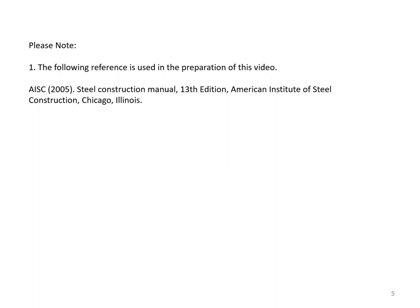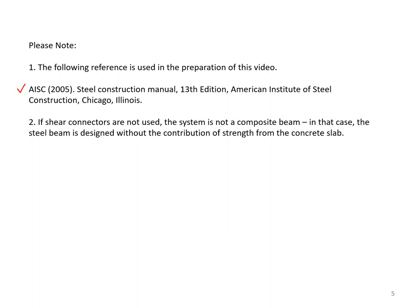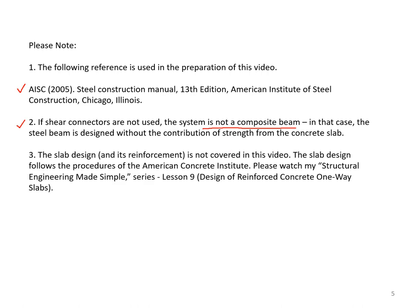The reference used in preparation of this video is the AISC 2005 Steel Construction Manual, 13th Edition, published by the American Institute of Steel Construction. If shear connectors are not used, the system is not a composite beam — the steel beam is designed without the contribution of strength from the concrete slab. The slab design and its reinforcement follows the procedures of the American Concrete Institute, ACI. Please watch my Structural Engineering Made Simple series, Lesson 9, Design of Reinforced Concrete One-Way Slab, which would be applicable in this case.